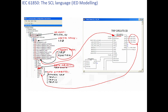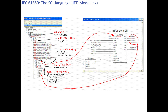OP is a data object; you may also have STR, behavior, or health — these are all data objects. If you expand OP, you get general trip, A phase, B phase, or C phase trip. These are called data attributes.